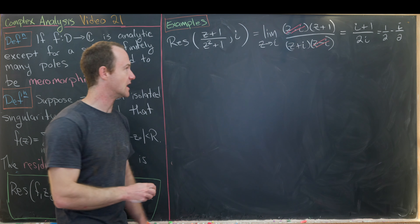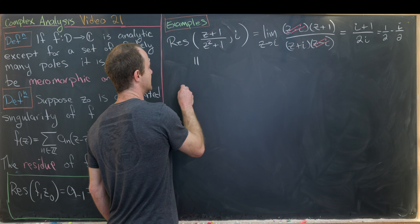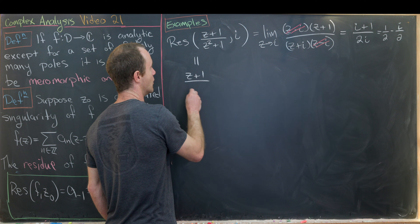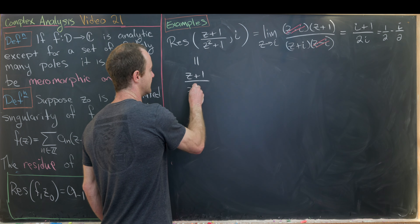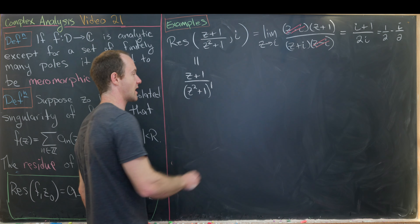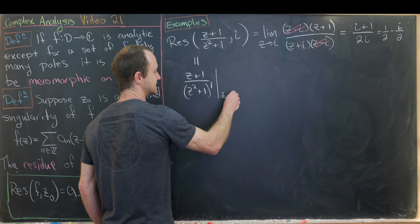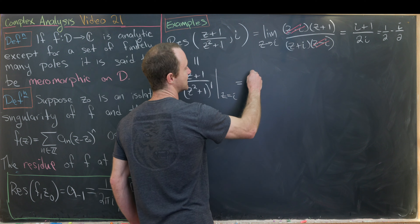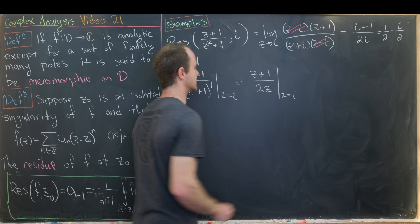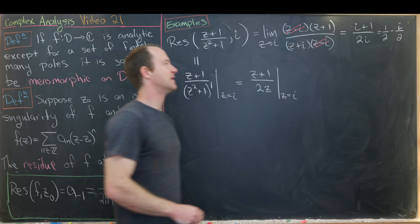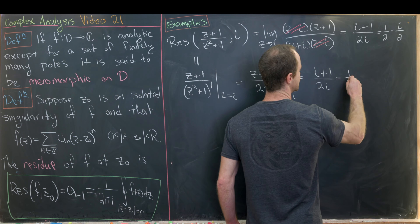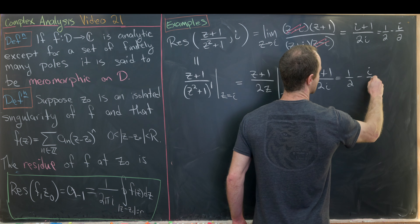Using the second method: (z+1) over the derivative of (z²+1), evaluated at z = i, gives (z+1)/(2z) at z = i, which is (i+1)/(2i) = 1/2 − i/2 — exactly the same result.